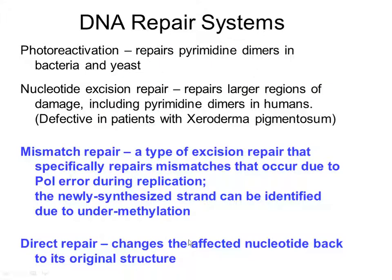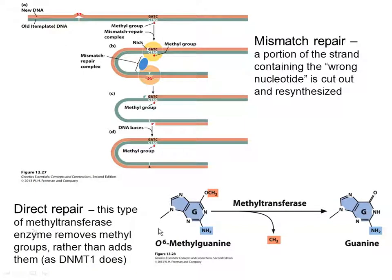Then there is direct repair, which is simpler. You're not re-synthesizing a whole segment — you're just changing the affected nucleotide back to its original structure. Photoreactivation can be included in this category. For example, if a nitrogenous base has been methylated and that creates problems, enzymes can remove that methyl group and just repair the problem. In this example, the enzyme is called methyltransferase, but this particular methyltransferase removes methyl groups, whereas others like DNMT1 add methyl groups. Methyltransferase is an enzyme that moves methyl groups around.